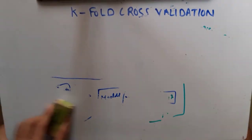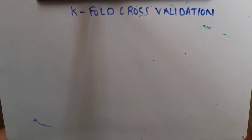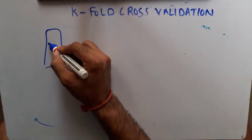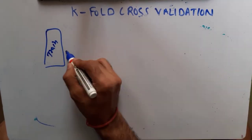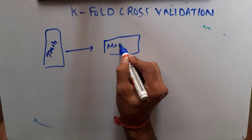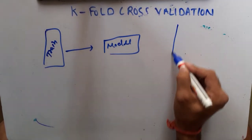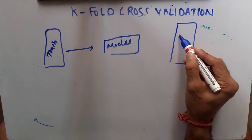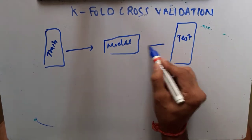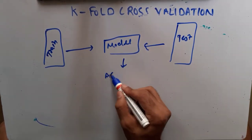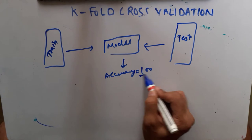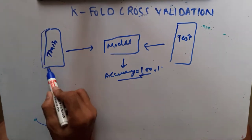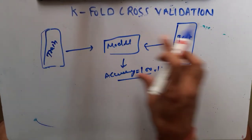So what should we do to handle such a situation? One option could be to give all 100% of the data to our model during training. But what will happen in this scenario? We will get an accuracy of 100%, because we are training our model on the same data set and testing with the same data set.